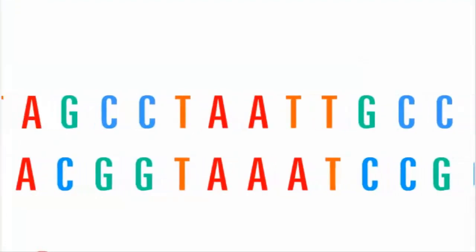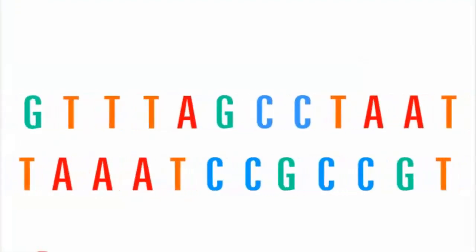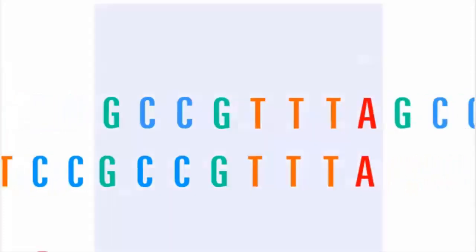Sequencing reactions can only reveal the order of a few hundred letters of DNA at a time, amounting to a fraction of a page. Having many overlapping segments of sequence allows the genome to be puzzled back together into an intact whole.